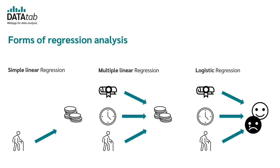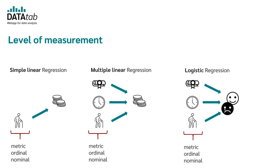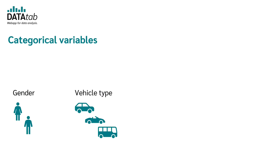In all cases, the scale level of the independent variables does not matter — they can be nominal, ordinal, or metric. The dependent variable is metric in the linear case and nominal or ordinal in logistic regression. It is important to note that nominal or ordinal independent variables may classically have only two characteristics, such as gender with male and female. If your variables have more than two characteristics, you must form so-called dummy variables. There is a separate video explaining dummy variables in this playlist.